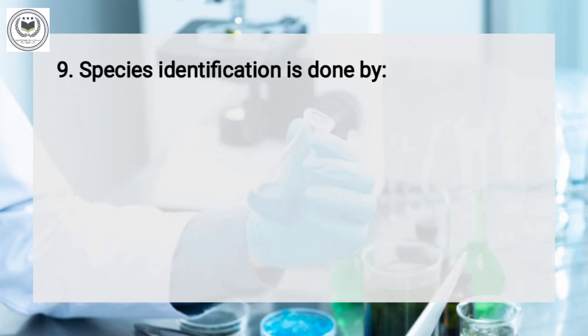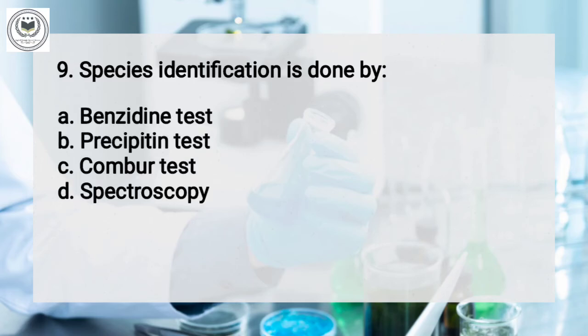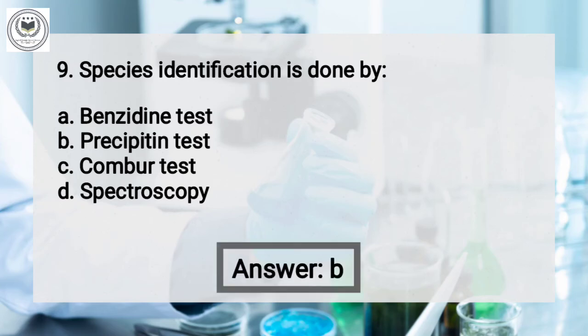Question number 9: species identification is done by — option A: Benzedine test, option B: Preciptin test, option C: Combo test, option D: Spectroscopy. And the answer is Preciptin test.